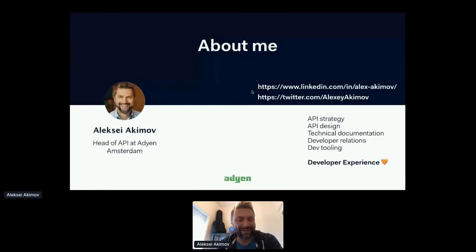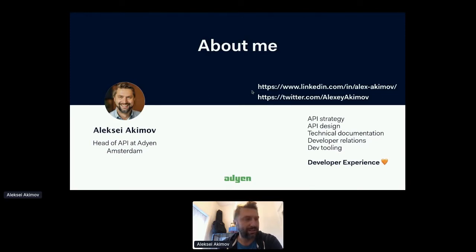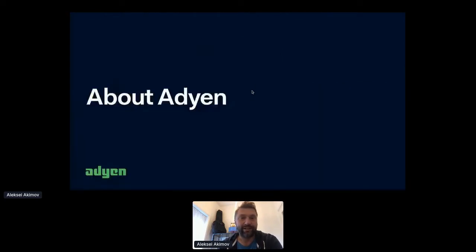My name is Alexei Akimov. I'm based out of Amsterdam, currently Head of API at Adyen. You can find me on LinkedIn and Twitter. My primary focus is related to API strategy, API design, technical documentation, developer relations — basically everything that leads to great developer experience, and APIs are the core of that.